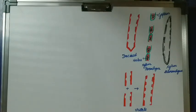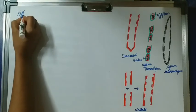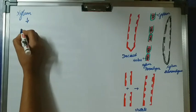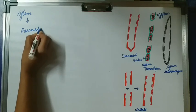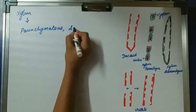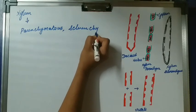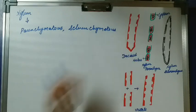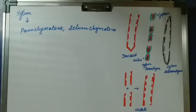We will deal with each one, starting with xylem tissue. As xylem is part of complex tissue, it is made up of more than one cell type. Xylem cells are parenchymatic as well as sclerenchymatic — meaning they have cells of both parenchyma and sclerenchyma. In simple permanent tissue we saw parenchyma, colenchyma, and sclerenchyma. That's why xylem is known as complex tissue.